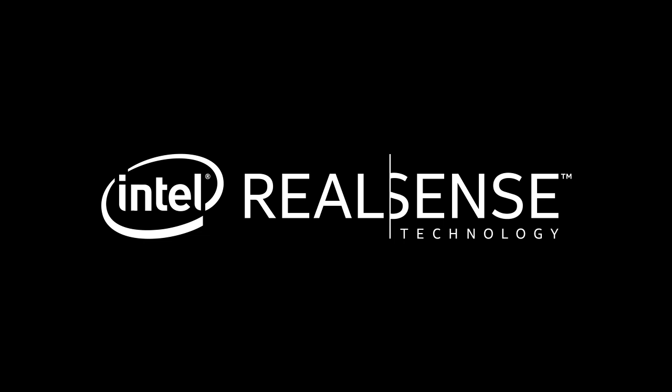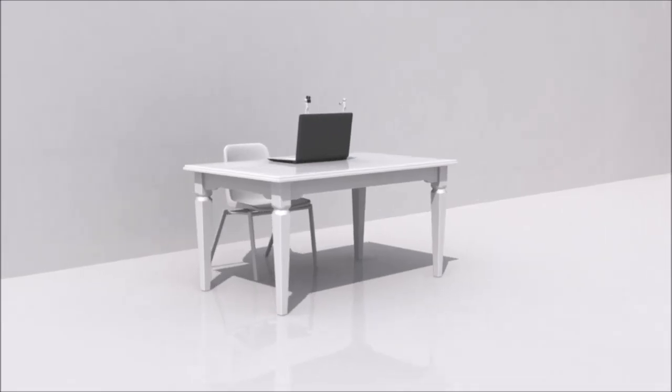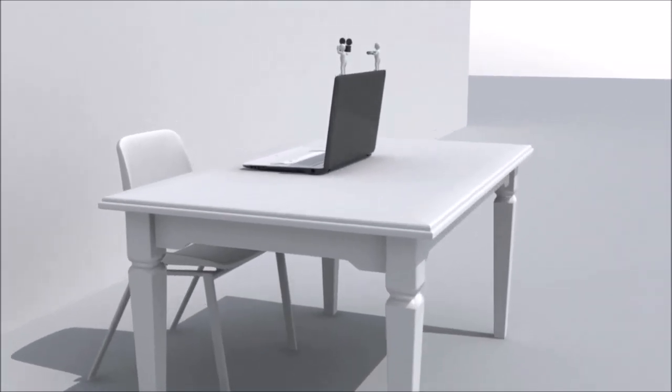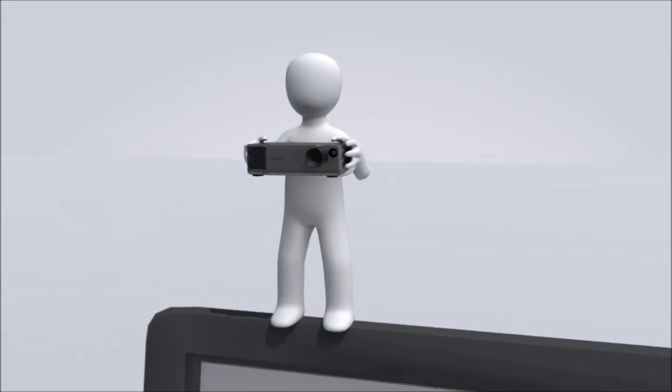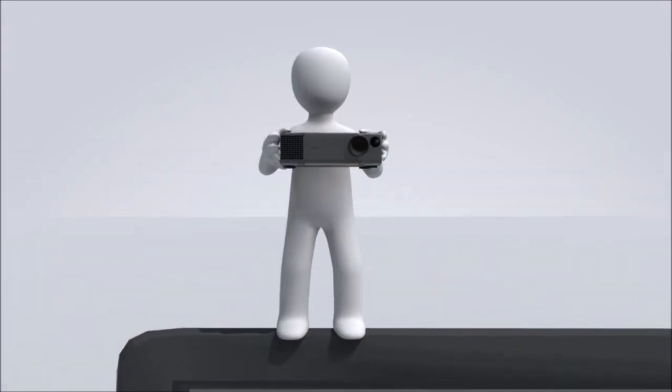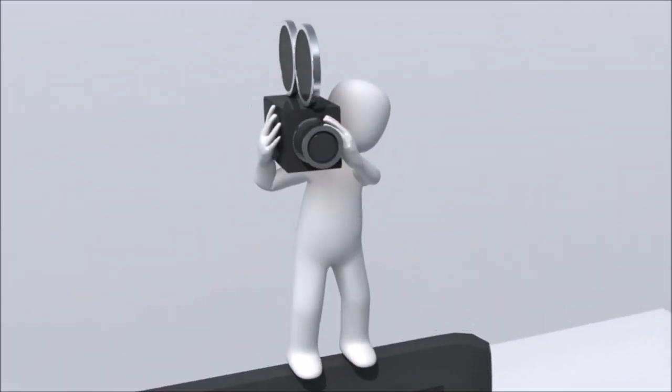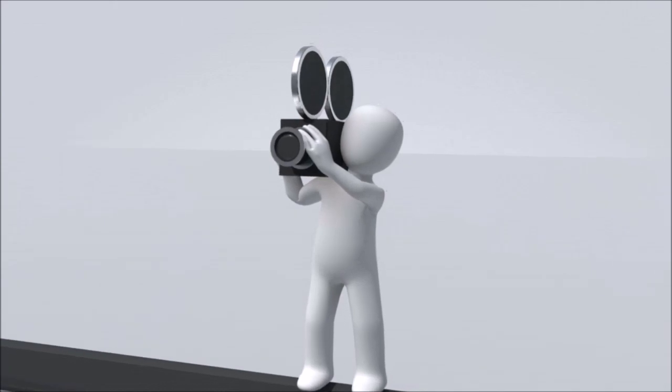The Intel RealSense Depth Camera SR305 is a coded light depth camera. The general principle behind coded light systems is to capture depth information, or distance from the camera, by projecting an infrared light pattern onto surfaces and objects. This pattern is then captured and analyzed by the camera and interpreted as depth data.